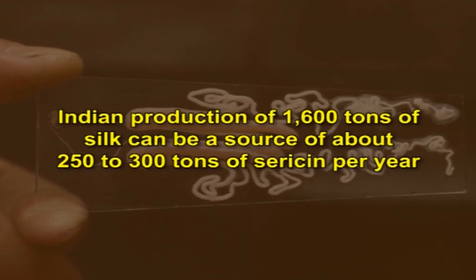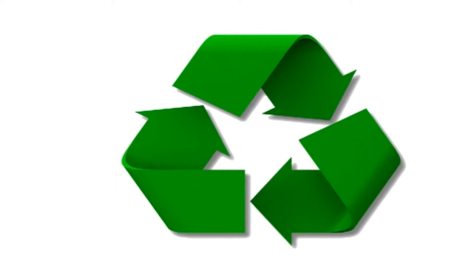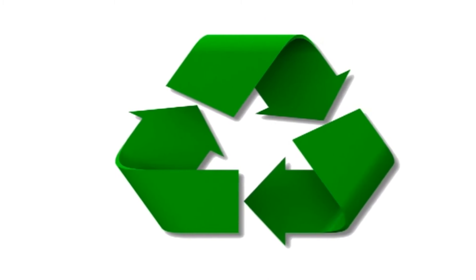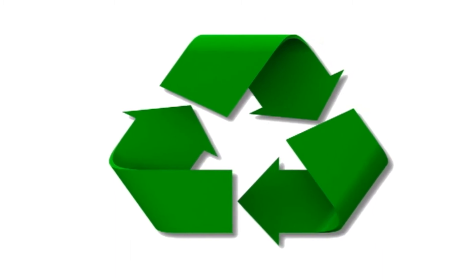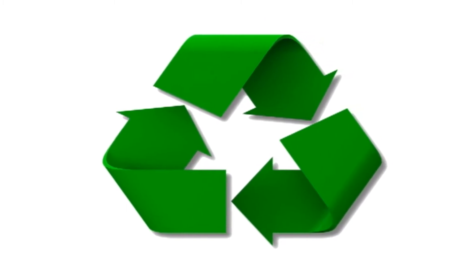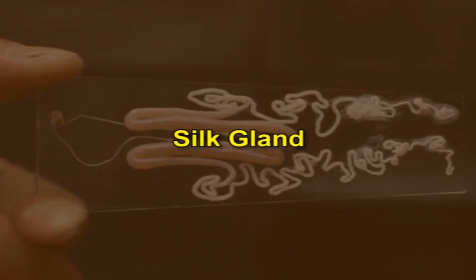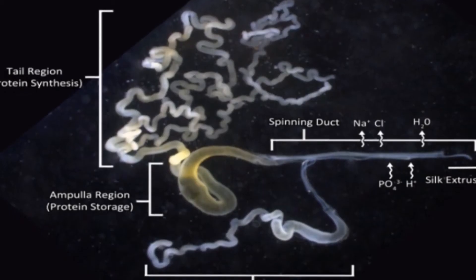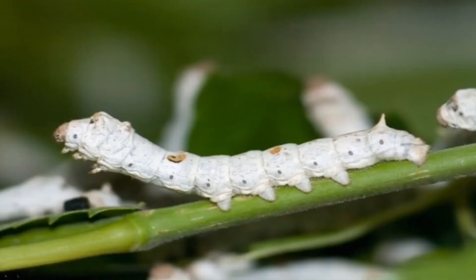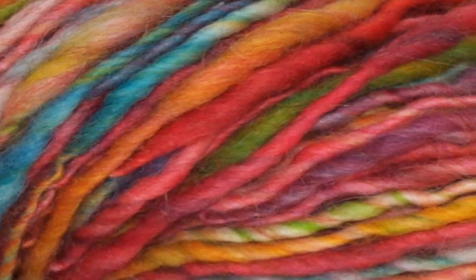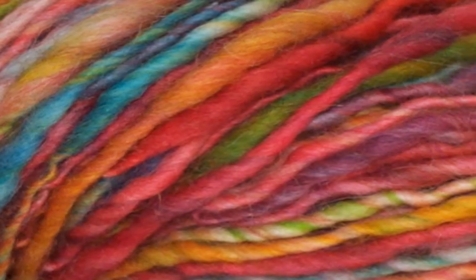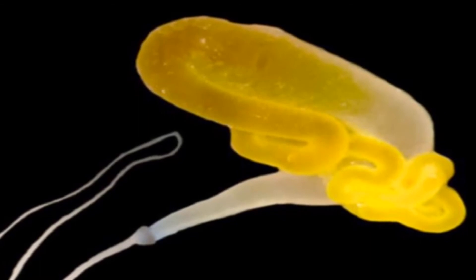Indian production of 1,600 tons of silk can be a source of about 250 to 300 tons of sericin per year. If this sericin protein is recovered and recycled, it would be a significant economic and social benefit. The natural silk synthesized by the silkworm and spun in the form of a silk cocoon is originally synthesized in the silk gland.